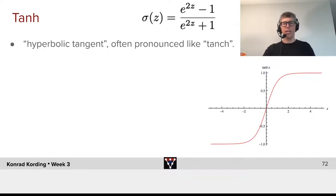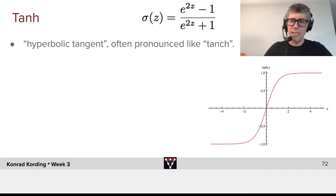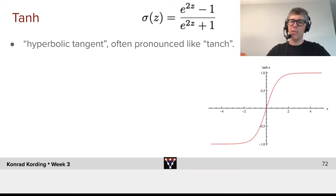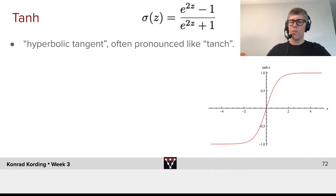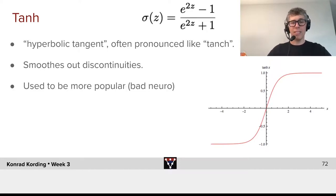Here we have tanh, called hyperbolic tangent. It's often pronounced as 'tanh'. It's e to the 2z minus 1 divided by e to the 2z plus 1. The really important thing is it's just a smooth, differentiable function that goes from minus 1 to 1 — it smooths out any discontinuity.